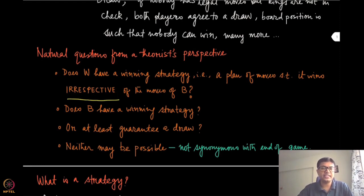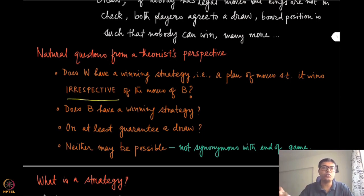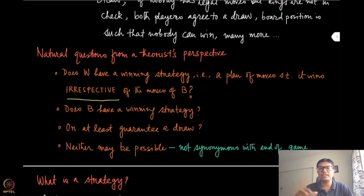There is a difference between a winning strategy and the outcome of the game. There are some other possibilities — maybe none of the three is true. White might not have a winning strategy, black might not have a winning strategy, and they might not even have a strategy to guarantee a draw. Having a winning strategy does not change the outcome itself — the outcome will still be a win for white, a win for black, or a draw. But a winning strategy means you can ensure that outcome no matter what the other player does — that is much more restrictive than just having an outcome.